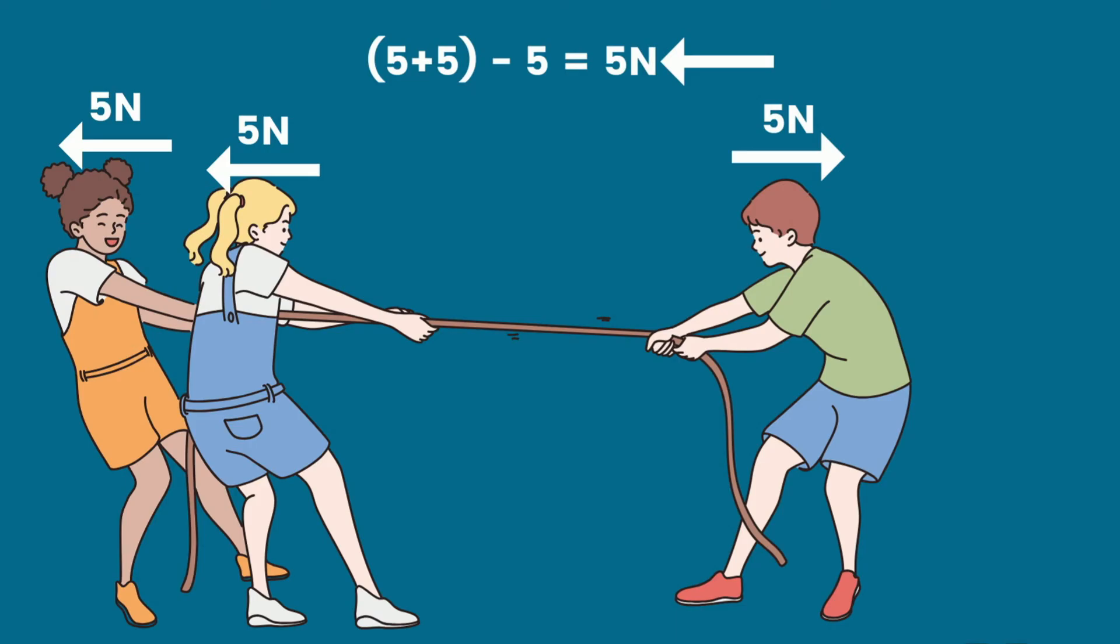In this one, we will add the two forces on the left and subtract them from the force on the right. The combined force on the left is greater, and we end up with five Newtons to the left, because that's the direction of the greater force.